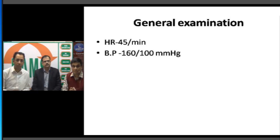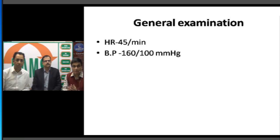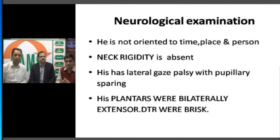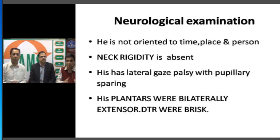On general examination, the patient had a heart rate of 45 per minute and a blood pressure of 160/100 mmHg. Bradycardia with hypertension can correlate clinically with central nervous system disorders — bradycardia combined with hypertension could be a sign of raised ICP, well known as the Cushing reflex.